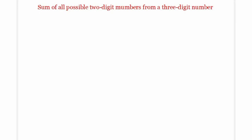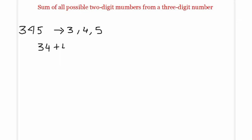For example, consider the number 345. The digits of this number are 3, 4, and 5. The possible 2-digit numbers that can be formed are 34 and its reverse 43.